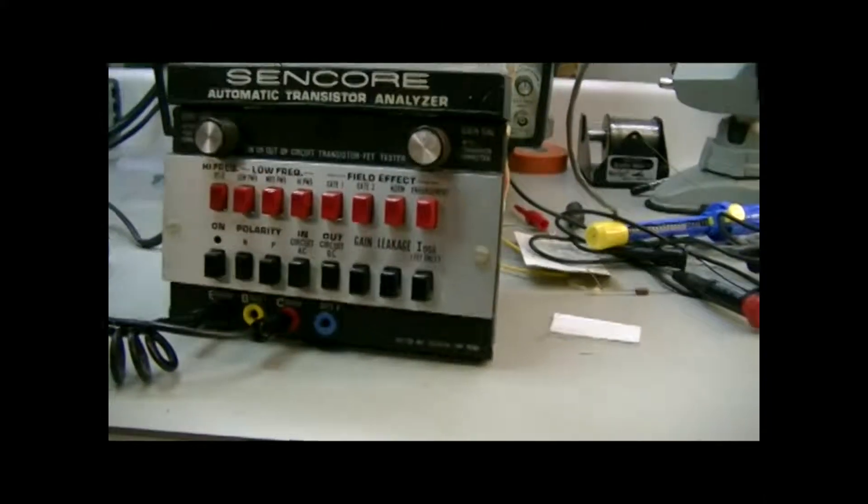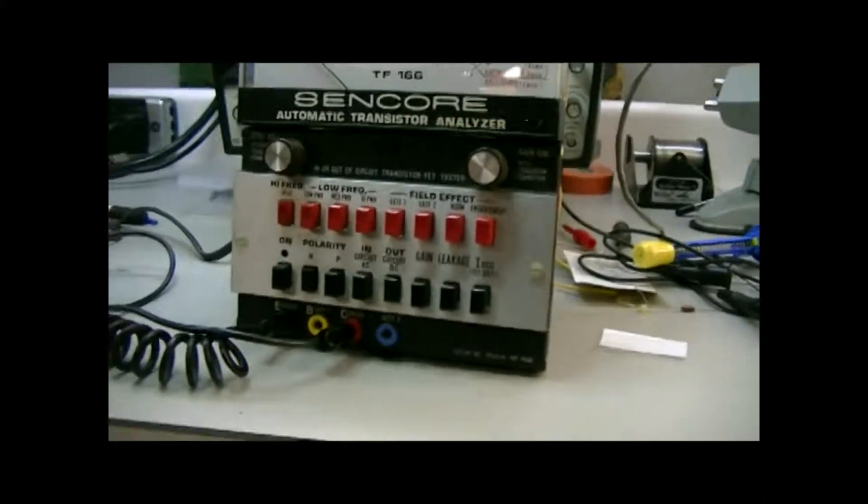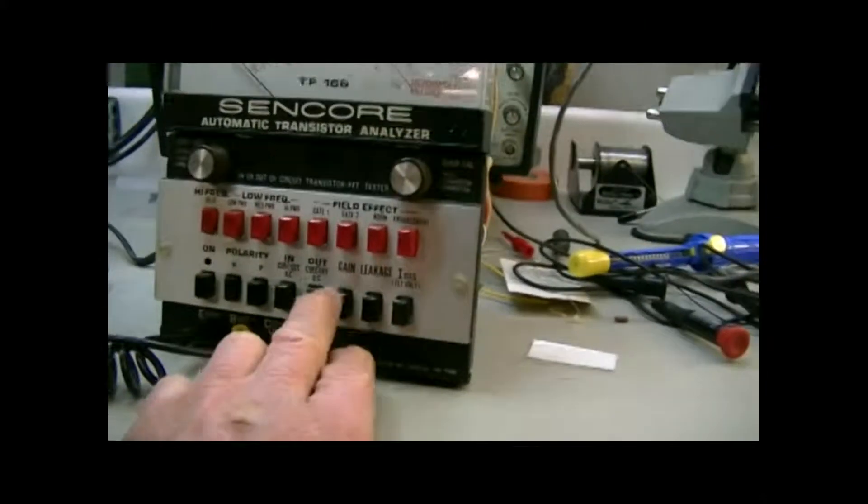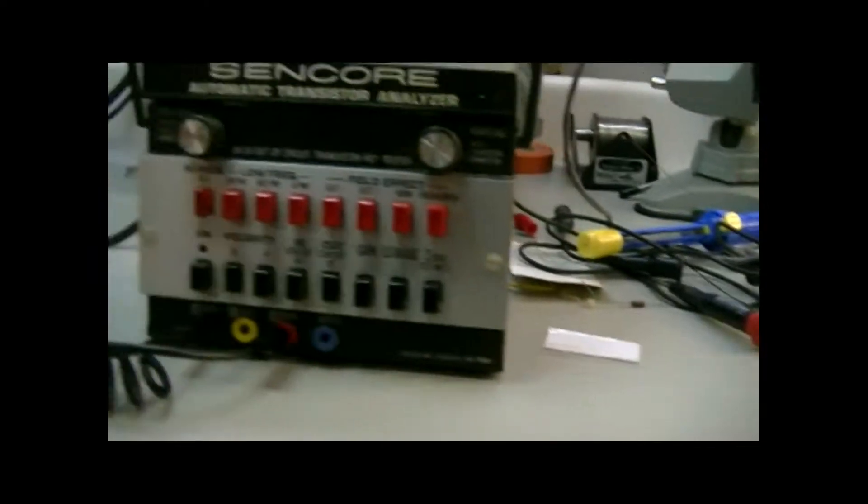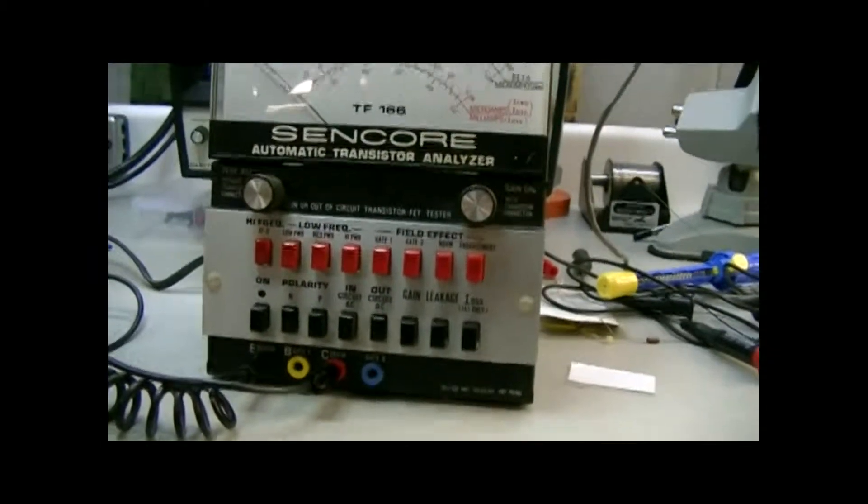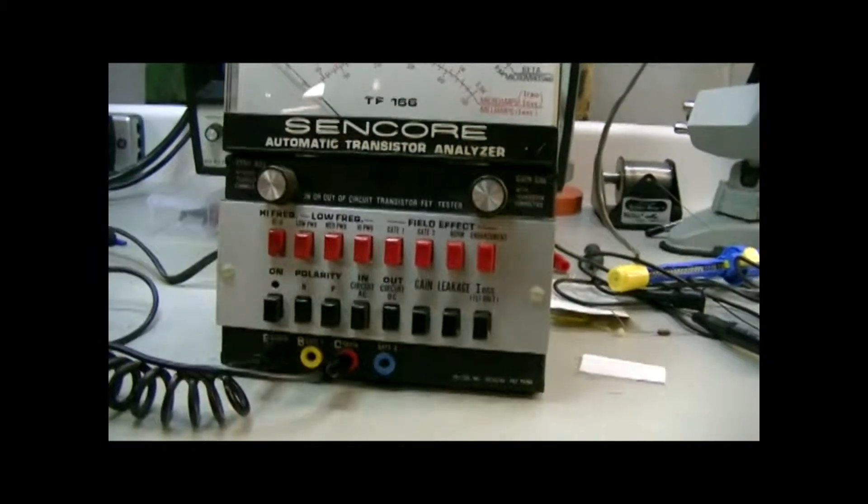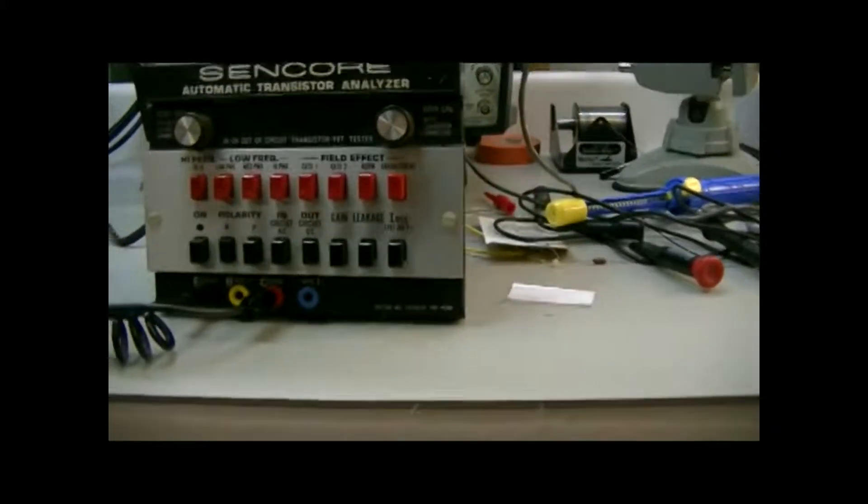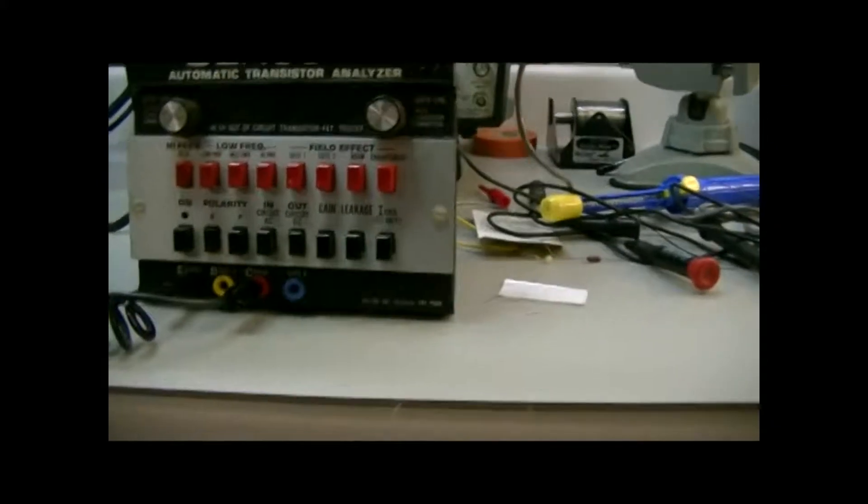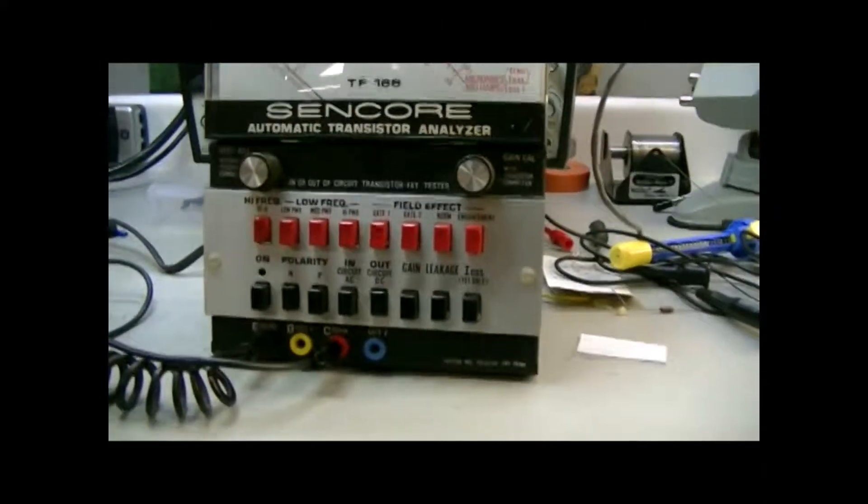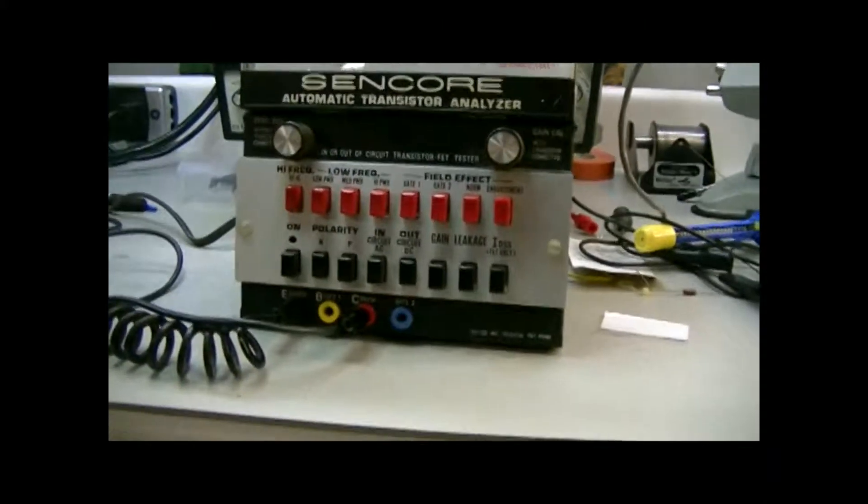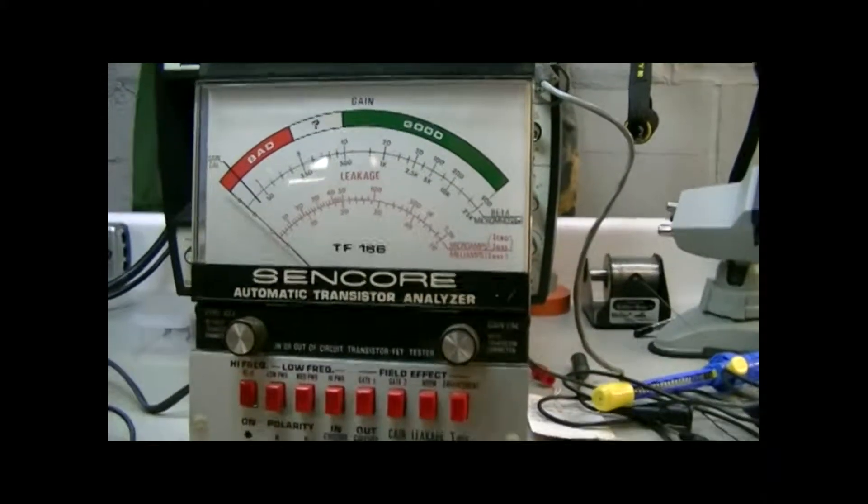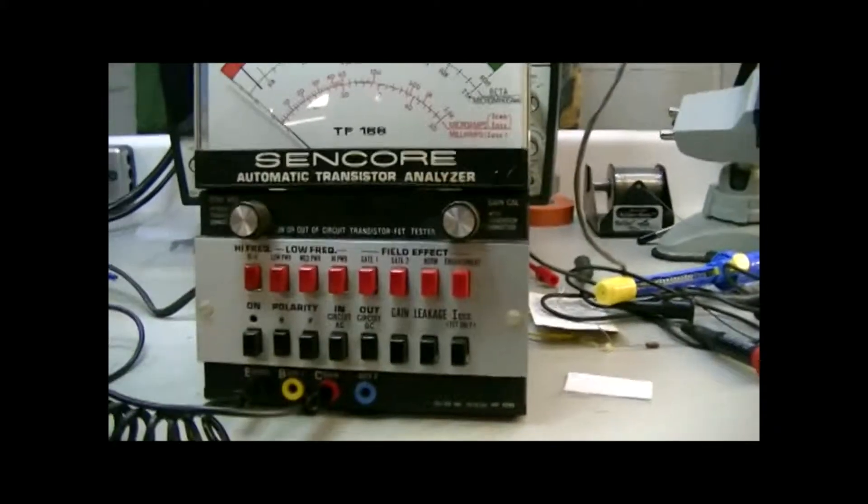But ever since I got this thing it was intermittent. I'd hook a transistor up and hit the gain button and sometimes it would work, sometimes it wouldn't, sometimes it would start to work and then quit. So I did some investigating around here. I think I found out what the problem is. I had it working pretty consistently before I turned the camera on, but it'll probably get camera shy and quit working again.